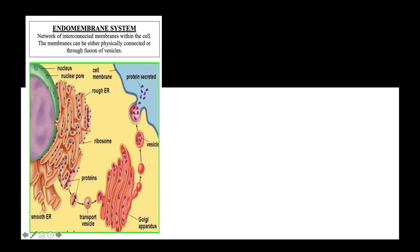To make your learning about the Golgi body more meaningful, it is important to know about the endomembrane system. The endomembrane system refers to a network of interconnected membranes within the cell. These membranes can be either physically connected, like the outer nuclear membrane to the rough endoplasmic reticulum, or through fusion of vesicles. Proteins produced in the rough endoplasmic reticulum are packed inside a vesicle and transported to the Golgi apparatus. The membrane of the vesicle originates from the membrane of the rough endoplasmic reticulum, and when the vesicle fuses with the Golgi body, the two membranes are connected through fusion of vesicles.